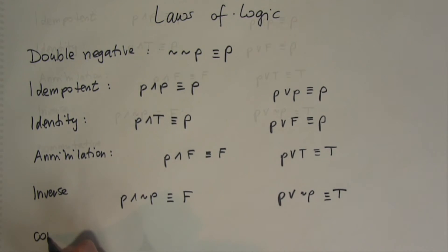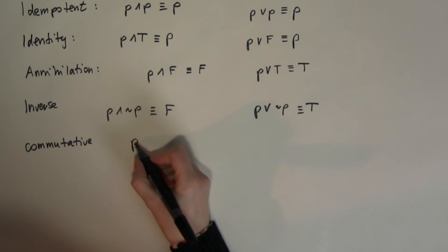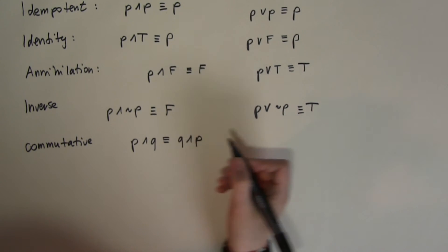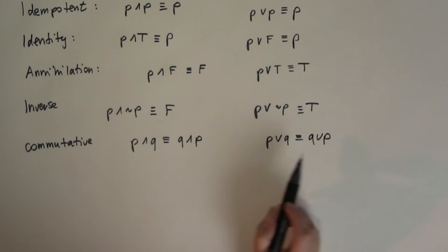Next law is commutative. You are probably familiar with this term. You might have heard addition and multiplication are commutative. And basically what you mean by that is that 2 plus 3 is the same as 3 plus 2, or 2 times 3 is the same as 3 times 2. And that's exactly what we mean by commutative law here. P and Q is the same as Q and P. And I can also say that P or Q is exactly the same as Q or P. So the order in which I put these inputs in doesn't make a difference as far as the output is concerned.